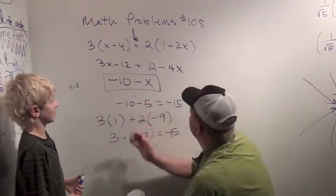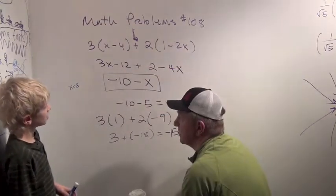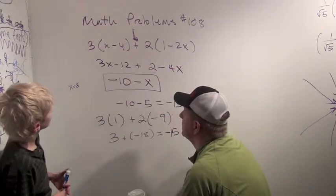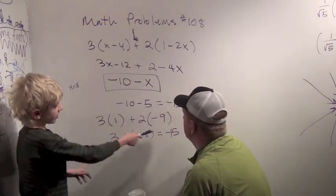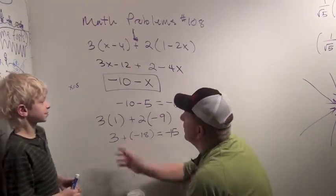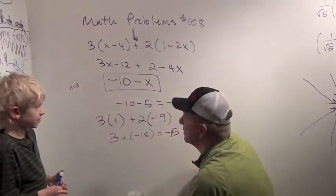Cool, right? Yeah. That's a pretty complicated algebraic expression, right? Yeah. And it just all got down to minus fifteen. Well, when x was five, it got down to minus fifteen.